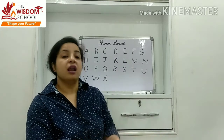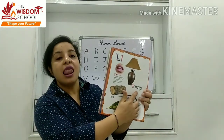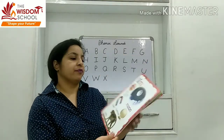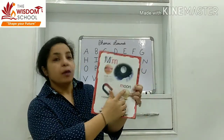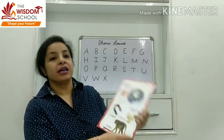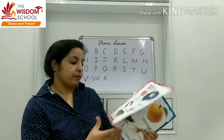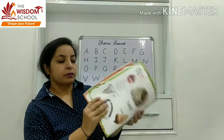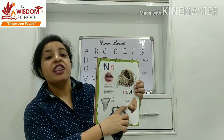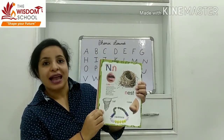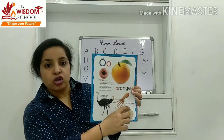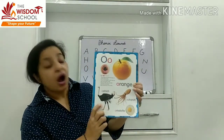Letter L — lamp, log, lizard, leaf. M — moon, mushroom, magnet, monkey. Letter N — N for nest, nest, nose, necklace, net. O — orange, octopus, omelette, ostrich.